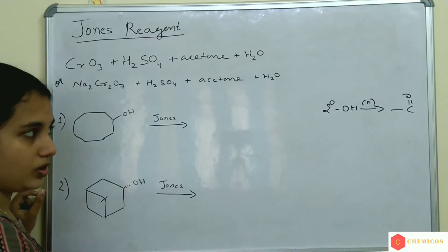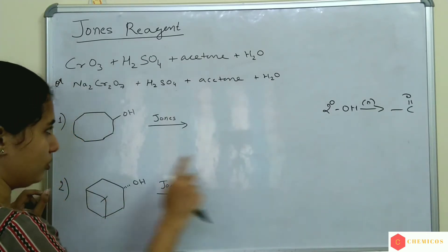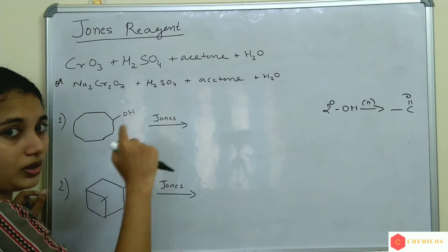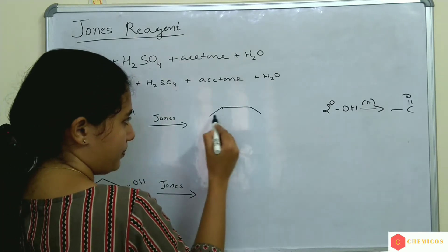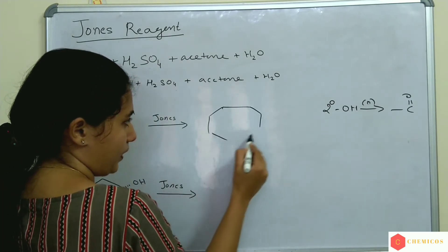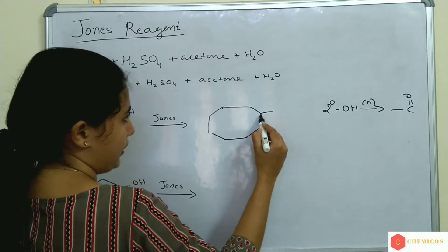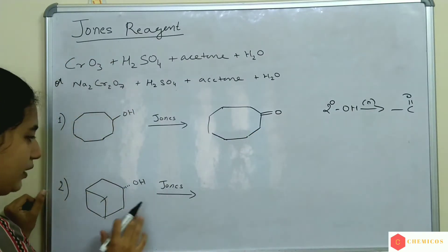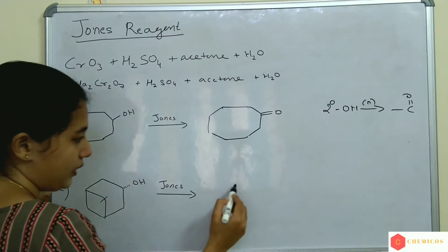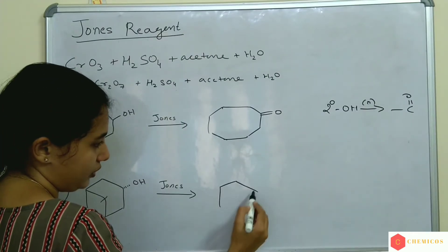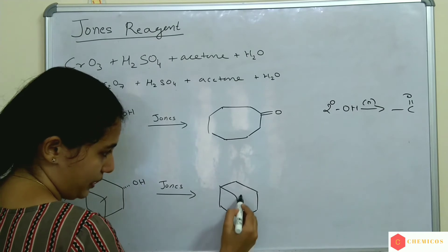This is the secondary alcohol. We said secondary alcohol is converted to a ketone. So, this alcohol can be converted to a ketone. Here also, a secondary alcohol is present and it can be converted to a ketone using Jones' Reagent.